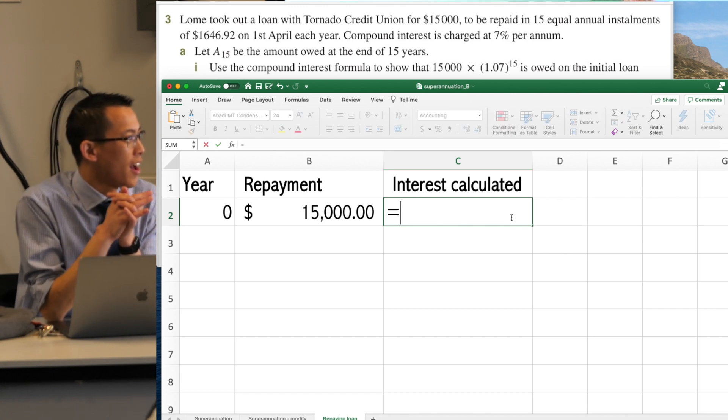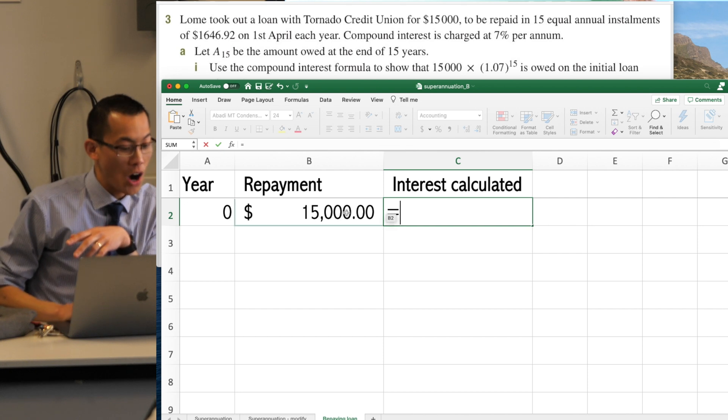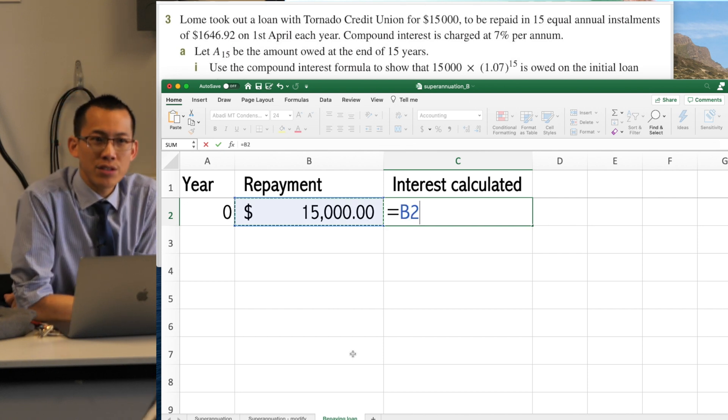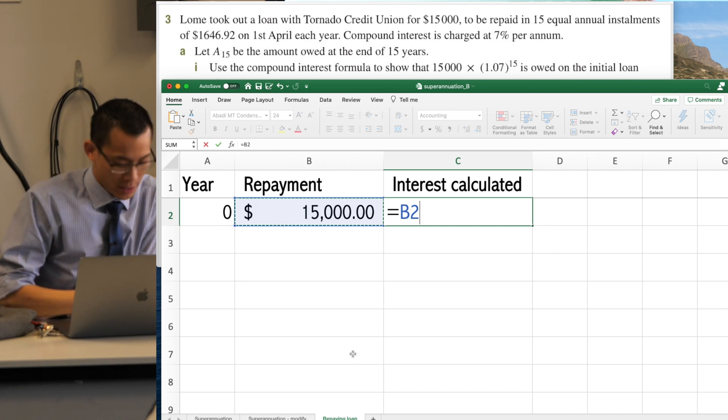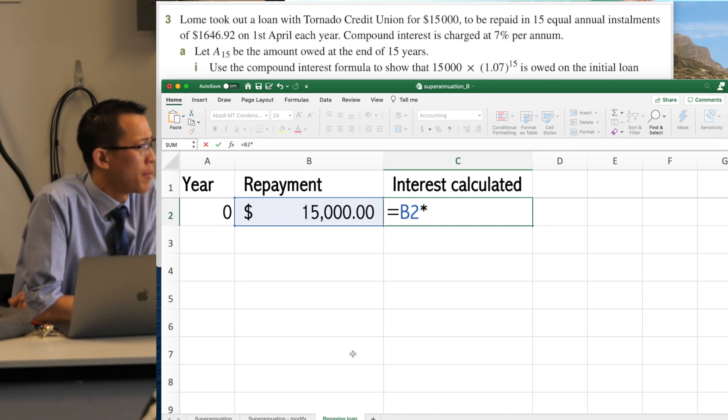So how do we do this? We're going to take the amount that was owing, there it is right there, and we're going to add on the interest. So I'm going to multiply by, well, what am I going to multiply by?